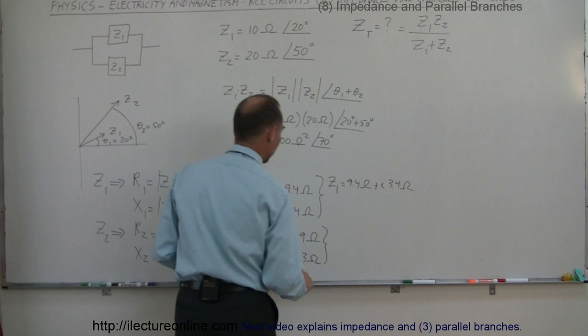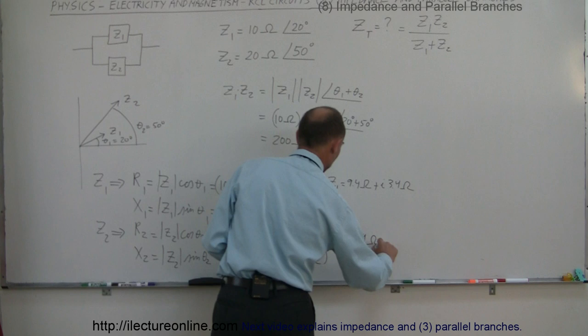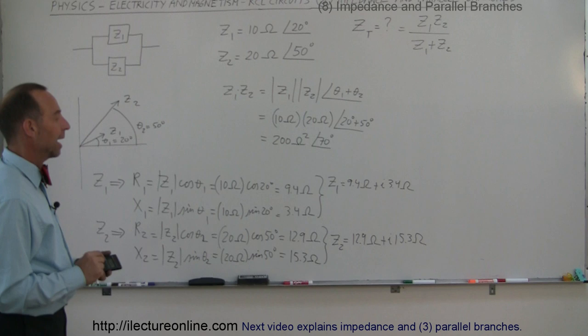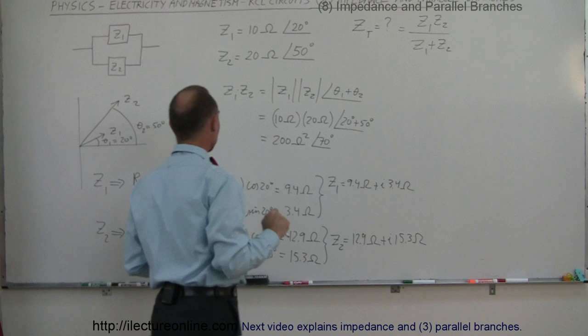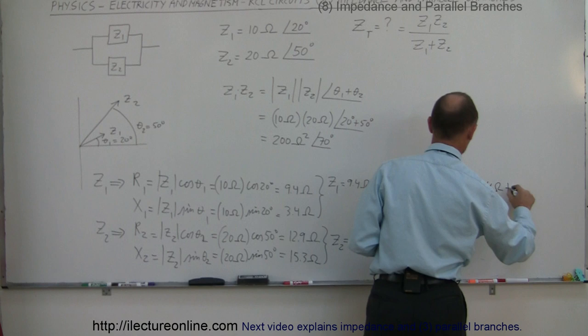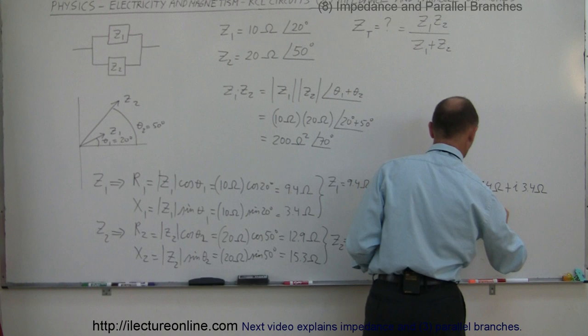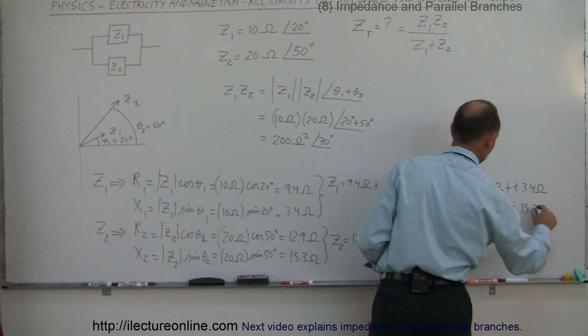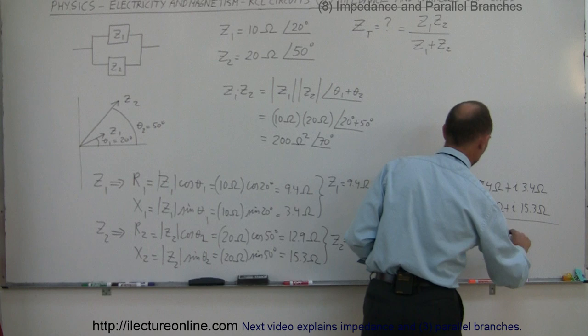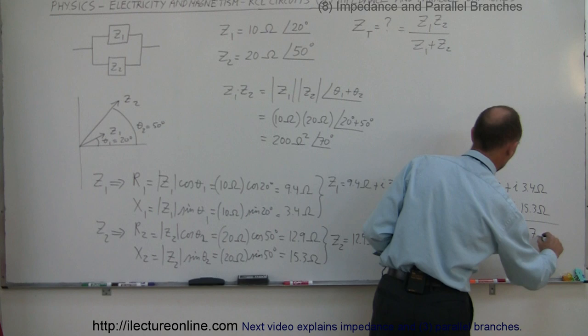Combining those, we can write Z2 as 12.9 ohms plus j times 15.3 ohms. Now we have Z1 and Z2 in complex number form and we can compute the denominator Z1 plus Z2. Adding real parts: 9.4 plus 12.9 equals 22.3 ohms. Adding imaginary parts: 3.4 plus 15.3 equals 18.7 ohms. So Z1 plus Z2 equals 22.3 plus j times 18.7 ohms.